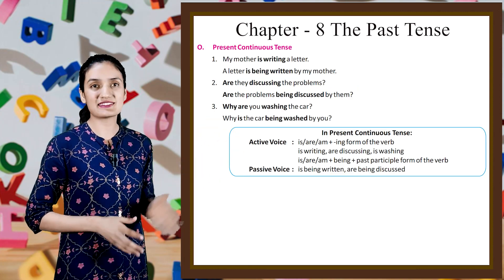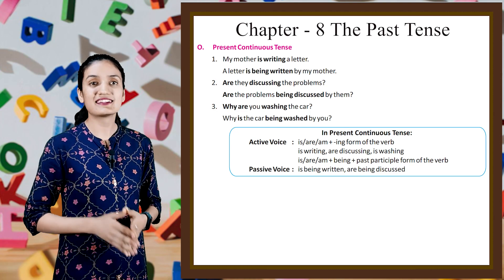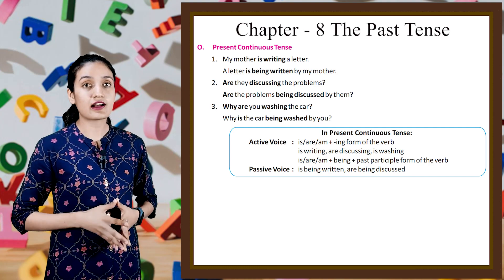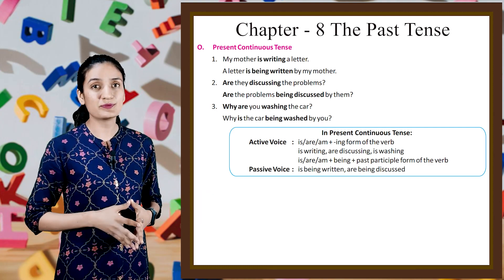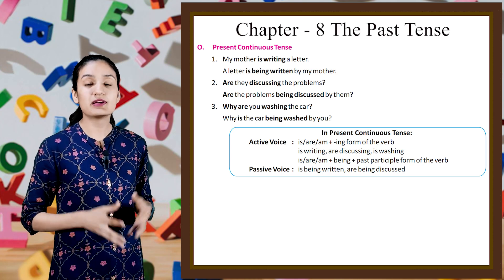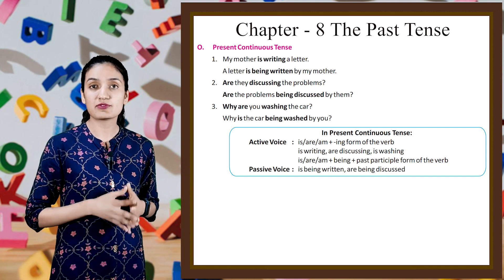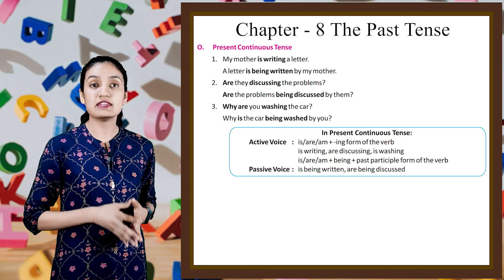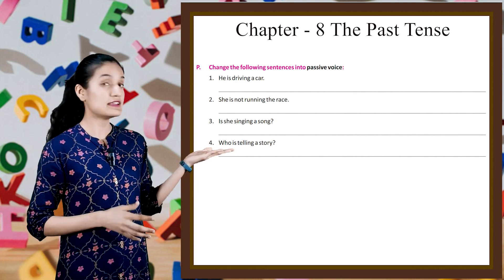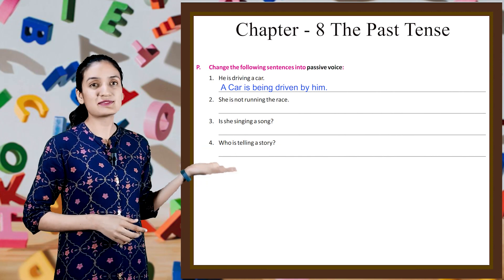Next is present continuous tense. 'My mother is writing a letter' — 'A letter is being written by my mother.' 'Are they discussing the problems?' — 'Are the problems being discussed by them?' 'Why are you washing the car?' — 'Why is the car being washed by you?' In present continuous tense, active voice uses is/are/am plus the -ing form of the verb — is writing, are discussing, is washing. Passive voice uses is/are/am plus being plus past participle — is being written, are being discussed. Example: 'He is driving a car' becomes 'A car is being driven by him.' Do the rest by yourself.